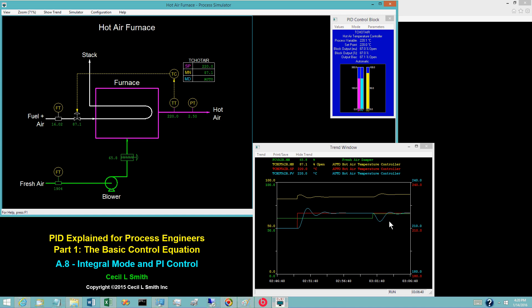With the integral mode in use, the controller increases the fuel valve opening sufficiently to return the hot air temperature to its set point of 220 degrees Celsius.